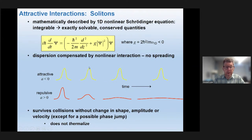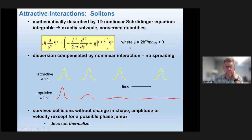Solitons are solutions of the so-called nonlinear Schrödinger equation. This equation should look familiar to you, except for maybe this interaction term, which scales by the density. That interaction term is the mean field interaction strength, and if you multiply that times the density, you get an interaction which is either attractive if G is negative, or repulsive if G is positive.